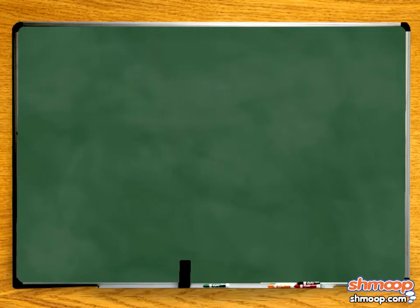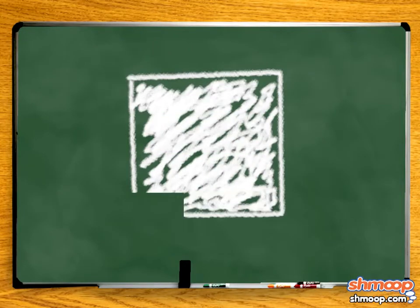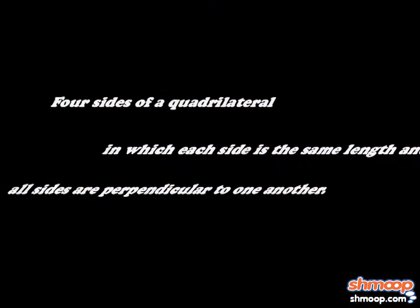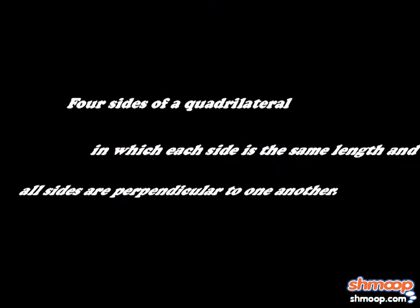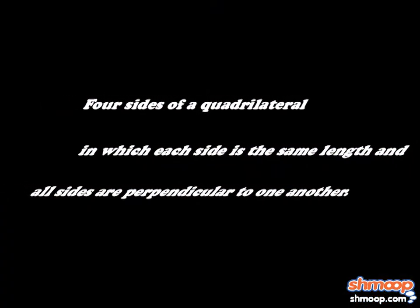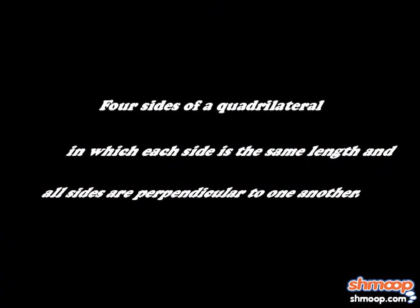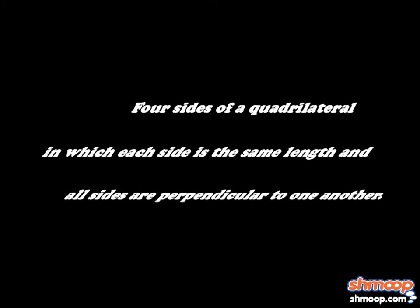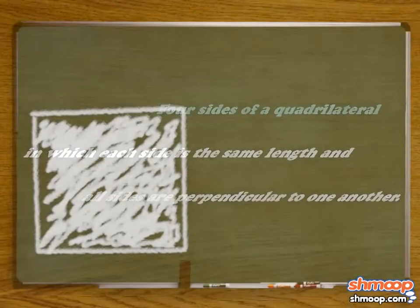Now that you have your picture, make sure you understand it. Hopefully it's easier to understand this picture than it is to understand all these words: four sides of a quadrilateral, in which each side is the same length, and all sides are perpendicular to one another.